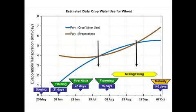Now, flowering in wheat occurs around 75 days, and that will depend a little bit on the weather conditions and the planting date. So to explain these dates and how they're affected by weather conditions and planting date, I'll take you through two more slides and then we'll come back to this slide.